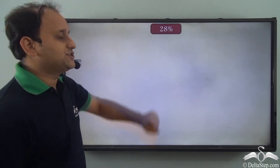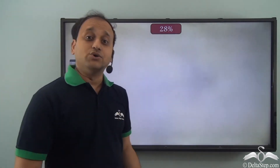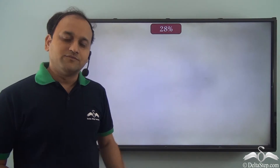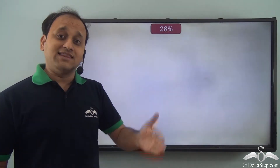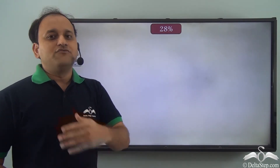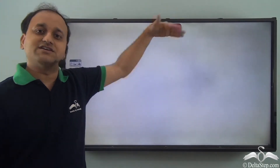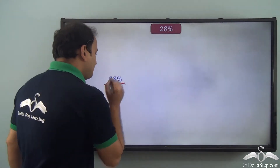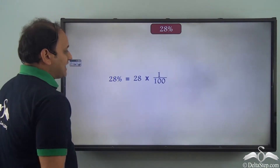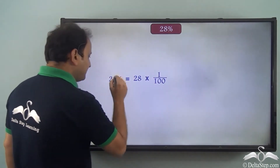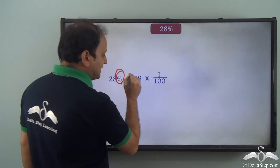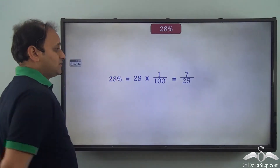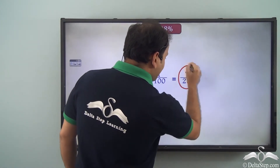Now, what if we need to convert a percentage into ratio? We'll just reverse that process — convert the percentage into a fraction and then the fraction to ratio. So we have 28 percent. We can write 28 percent as 28 into 1 by 100, because whenever you remove the percentage symbol you multiply the value with 1 by 100. When we solve this value, we get 7 by 25 — we have got a fraction.